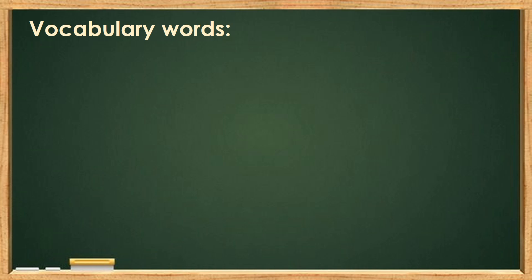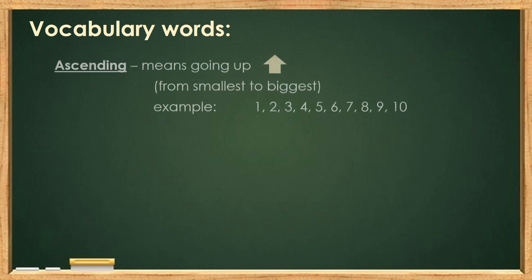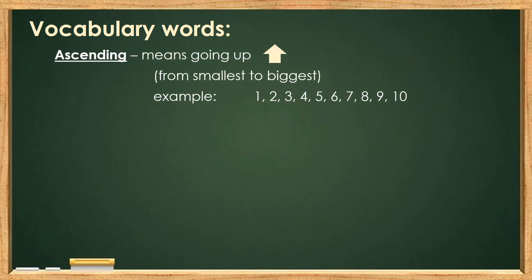First, let's look at some important vocabulary words. Ascending means going up. In ascending order, we have to start from the smallest number up to the biggest number. For example, let's start from 1 going to number 10.